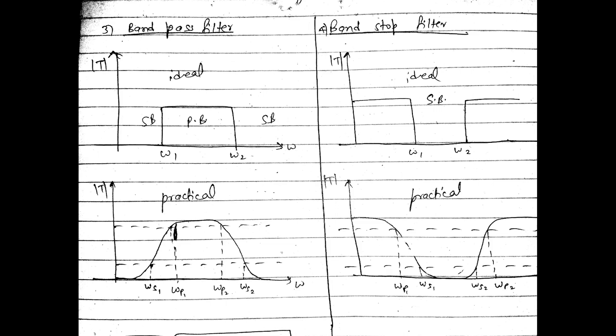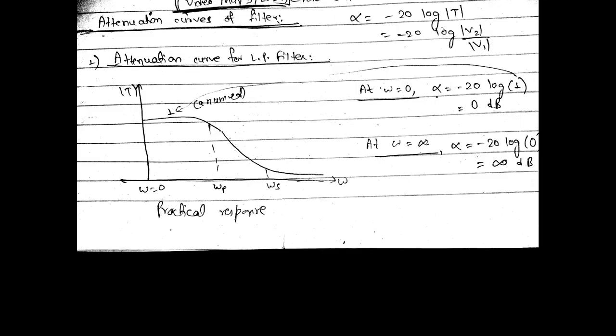In the practical band stop filter, the output starts decreasing after the pass band, reaches zero at ωs1, remains zero through the stop band, and then after ωs2 the output starts increasing again, attaining a constant value from ωp2. Now we move to another topic: attenuation curves for filters.